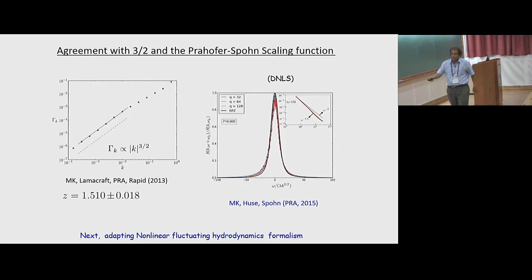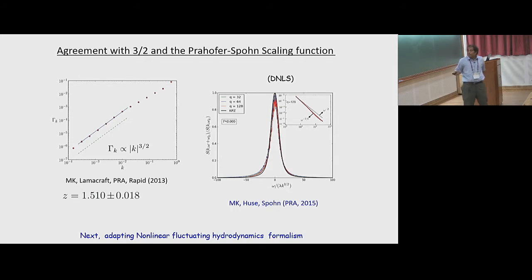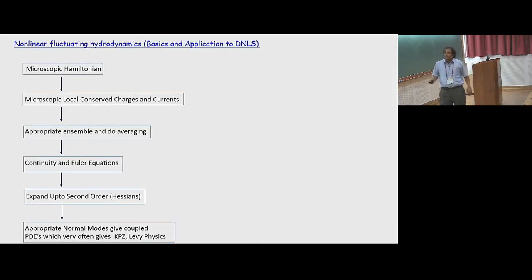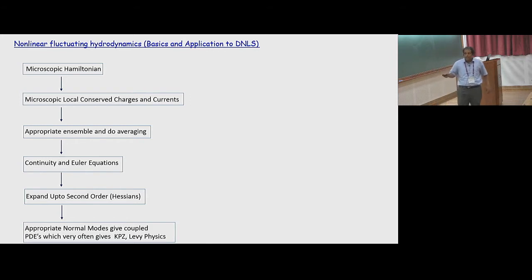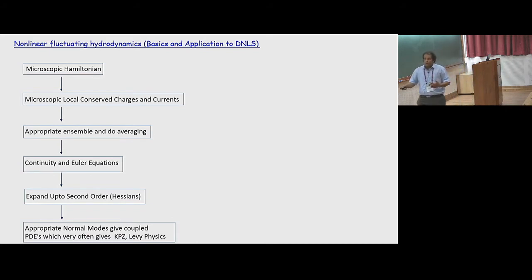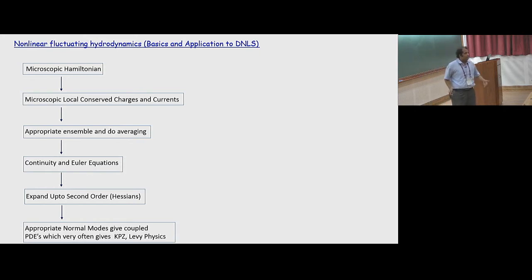To adapt the NFH formalism to the discrete nonlinear Schrödinger equation: the general idea is that you have a microscopic Hamiltonian with local conserved charges and currents, then do appropriate ensemble averaging, write continuity Euler equations, expand to second order, go to appropriate normal modes — which gives coupled partial differential equations — and hidden in that is KPZ physics and Lévy physics.